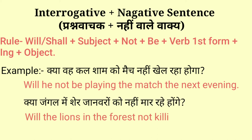Second example: 'Kya jangal mein sher janwaron ko nahi maar rahe honge?' — Will the lions in the forest not be killing the animals? Is vaakya mein 'will be' helping verb hai, 'the lions in the forest' subject hai, 'not' nahi ke liye prayog kiya gaya hai, 'killing' verb ki first form + ing hai, aur baaki hamaara object hai.